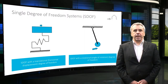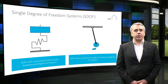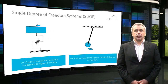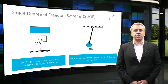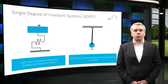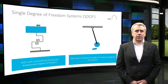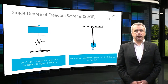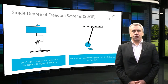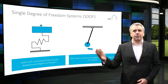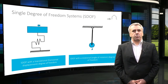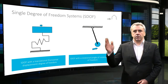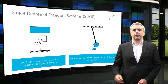Let me first explain what a single degree of freedom system is. In simple words, it is a system that can move in one direction only. It can either translate along a line, as the left animation shows here, or rotate around a pivot, as the pendulum at the right of this slide does.